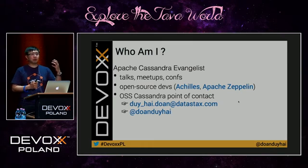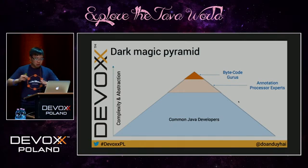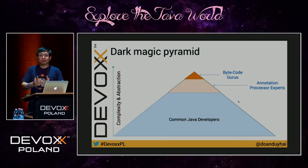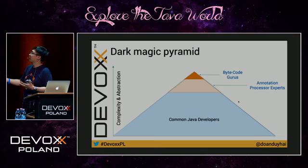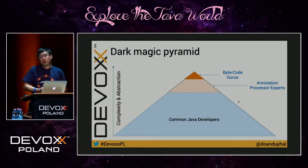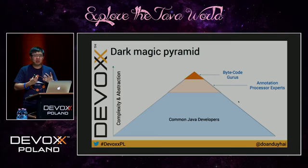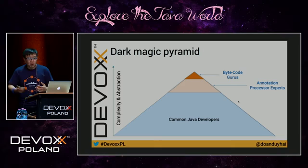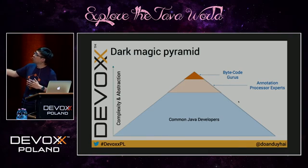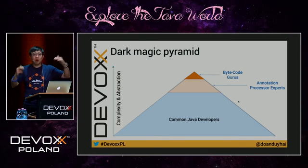In terms of complexity, we have a pyramid here. For common Java code, it's very easy. We have a lot of Java developers here. Very few people know about annotation processors, because when I started using annotation processors, I couldn't find really good documentation even on the internet. And then you have bytecode gurus — people who are writing bytecodes, and there are very few of them. The more you go up the pyramid, the more complex it is.